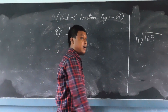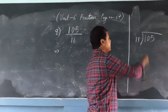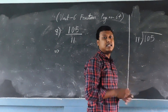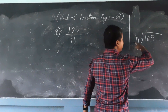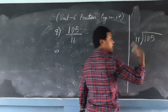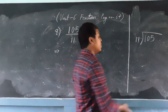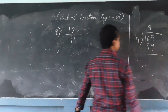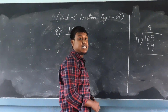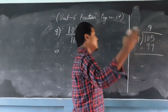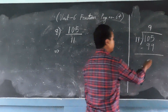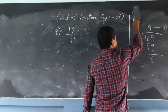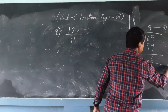We choose a number in the table of 11 that is less than 105. Let's take 9 — 11 nines are 99. 11 times 10 would be 110, which is more than the dividend, so we take 9. 105 minus 99 is 6. So the quotient is 9, the divisor is 11, and the remainder is 6.